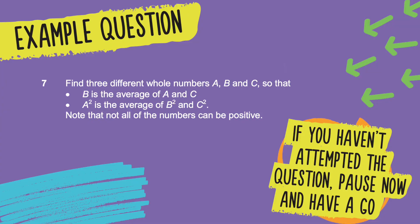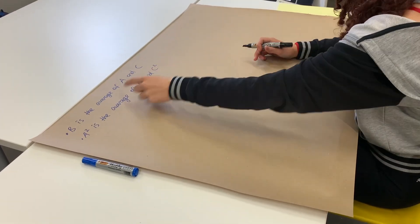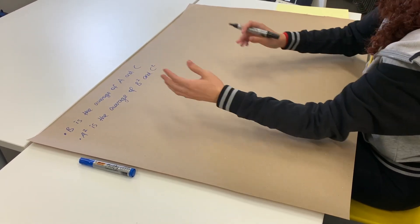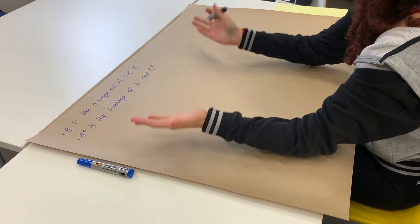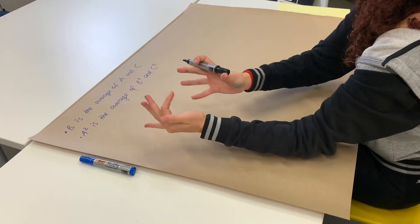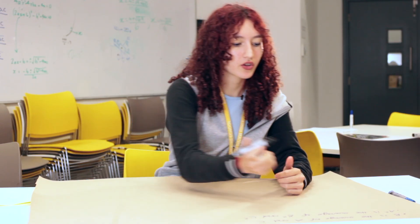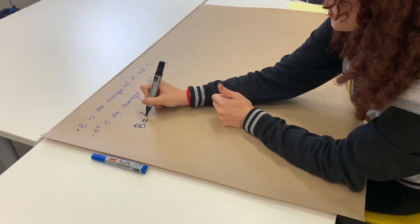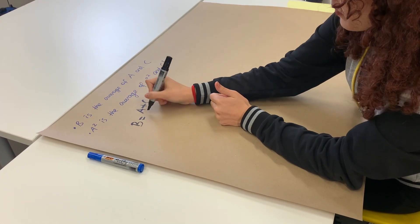We're looking for three numbers, A, B and C, where they can't all be positive and where B is the average of A and C and A squared is the average of B squared and C squared. You could do this question by just having a lucky guess, but I just want to show you how to do it algebraically today. Well, two numbers, if we're taking the average of them, we add them up and then divide it by two. So we can write B as A plus C over two.